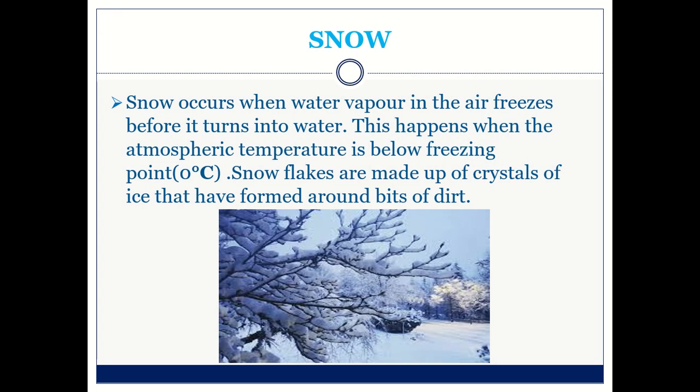In cold places, we experience snowfall. How is snow formed? Snow occurs when water vapour in the air freezes before it turns into water — that is, it forms into ice instead of water. This happens when the atmospheric temperature is below the freezing point, or below 0 degrees centigrade.